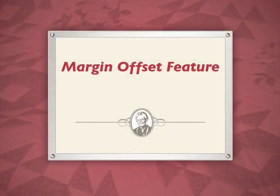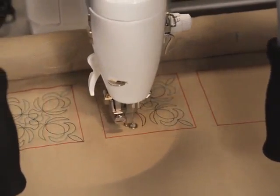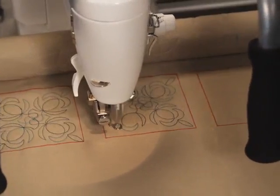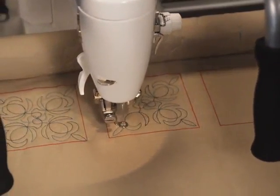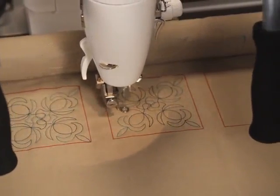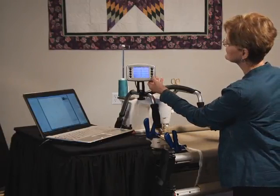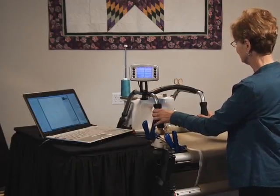Next we will show the margin offset feature. This feature allows you to offset your pattern from the border of the block in eighth inch increments, giving you the opportunity to fit a pattern into your block with a consistent margin all the way around. This margin can be preset in the preferences at your computer, or you can do it from the display.